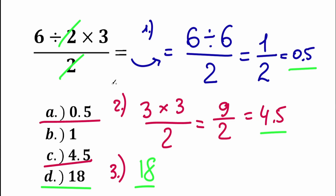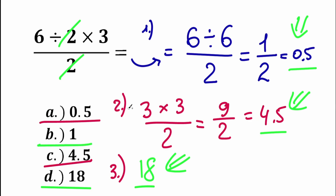Maybe 25% of students solve it one way, another 25% a different way, and another 25% yet another way — and it turns into a big argument. A lot of students forget about the main thing: order of operations. What is the correct order to perform these mathematical operations? We have division, multiplication, and a fraction bar, and it turns into a big argument.